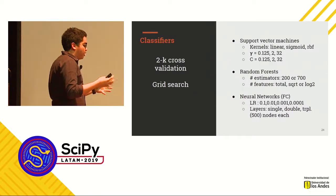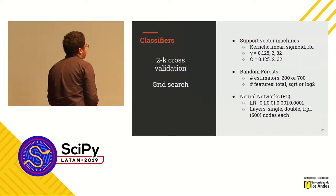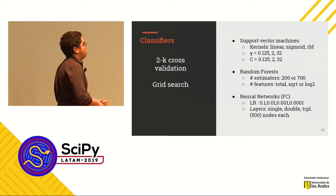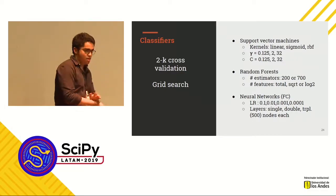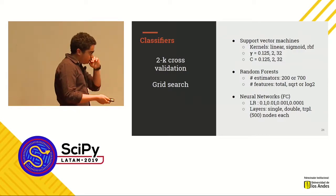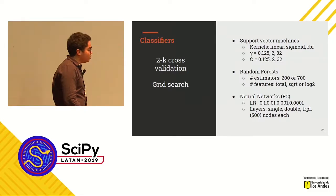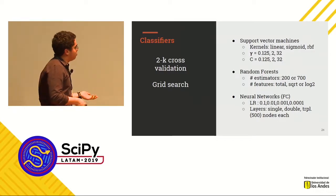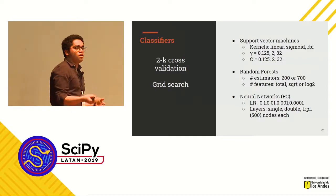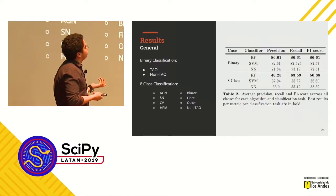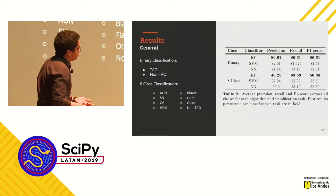With the feature space built, we applied three different classifiers: support vector machines, random forests, and neural networks, using 2K cross-validation and a grid search. We got every possible permutation from the hyperparameters for each classifier and then trained the algorithms. Surprisingly, many people think that neural networks are the best classifier — partly because they're fashionable right now — but the best classifier we got was not the neural networks or the support vector machines; it was the random forests.